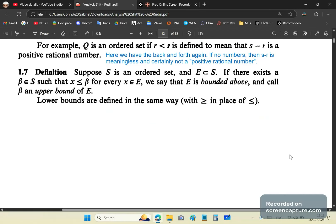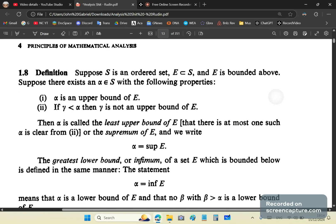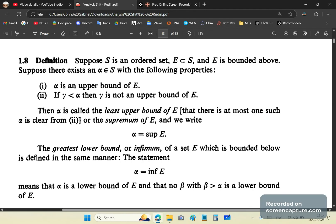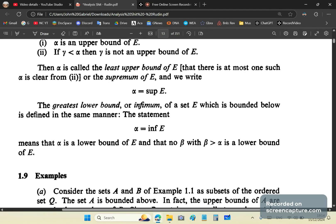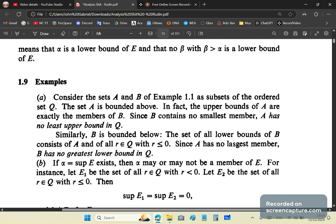And so this baboon Rudin goes into the next definition where it starts to define whether a set is bounded above or below. Now, this, by the way, can only apply to numbers. It can't apply to anything else. I don't care what your lecturer tells you. He's wrong. And so basically, if you have a set S and it's ordered, it is ordered if it contains numbers. And beta is an element of S and X is less than or equal to beta for every X is an element of E, we say that E is bounded above. And so then he continues in the next definition to define two concepts which are pretty common in set theory, the least upper bound, which is called the supremum and the greatest lower bound, which is called the infimum of E.